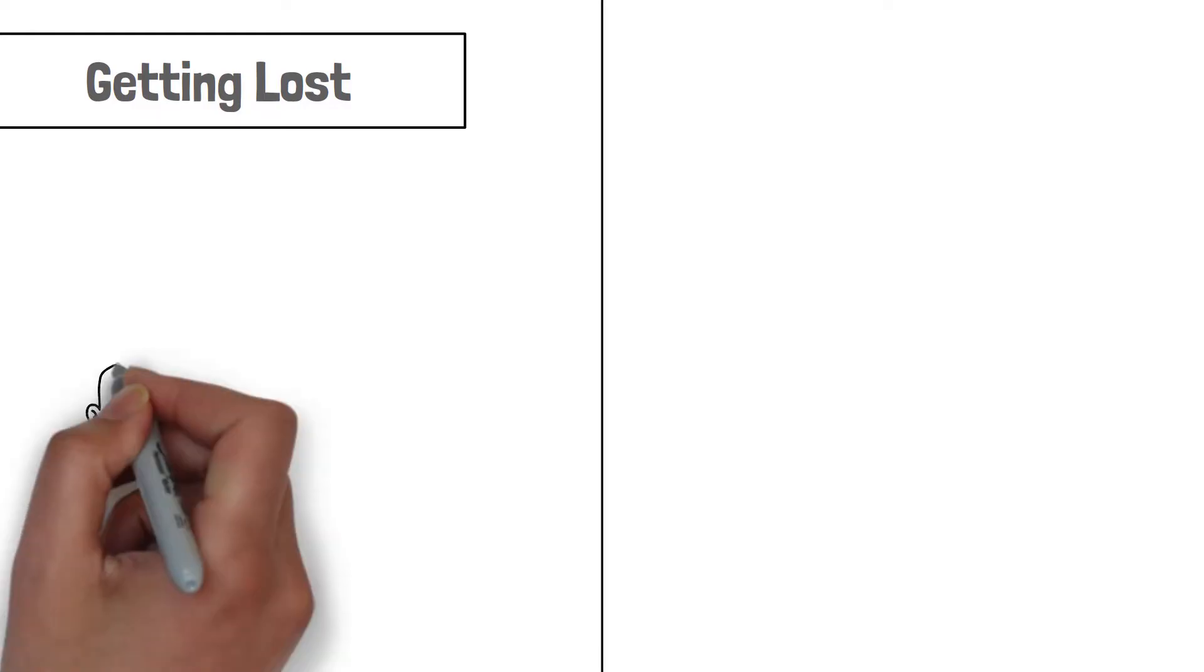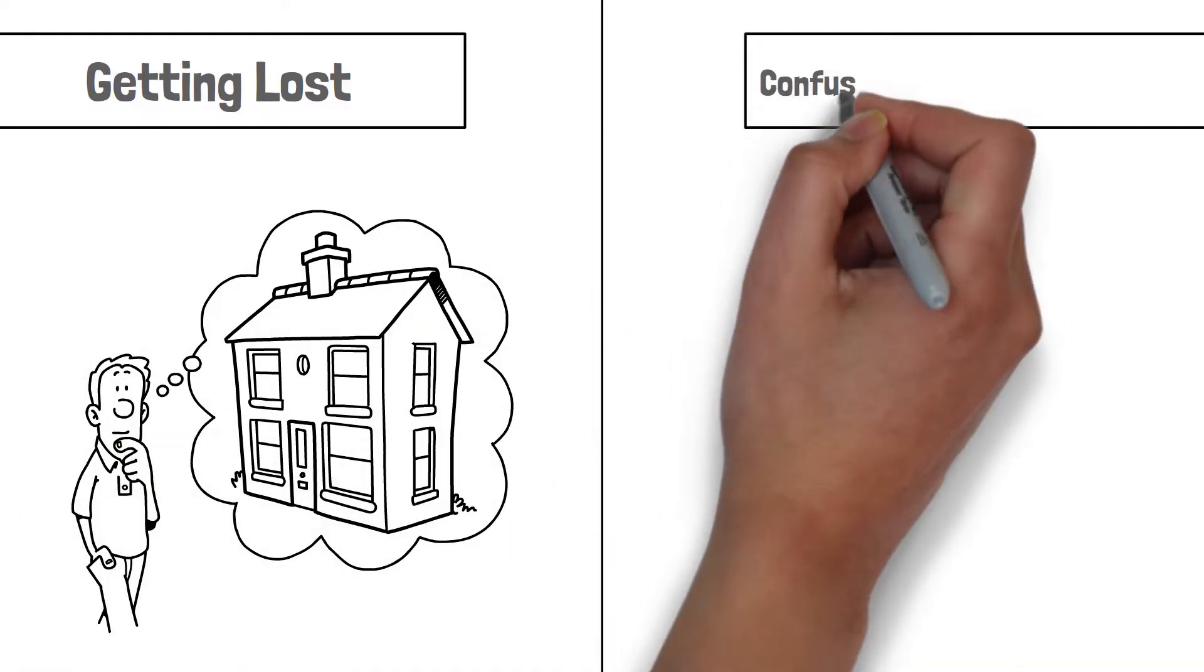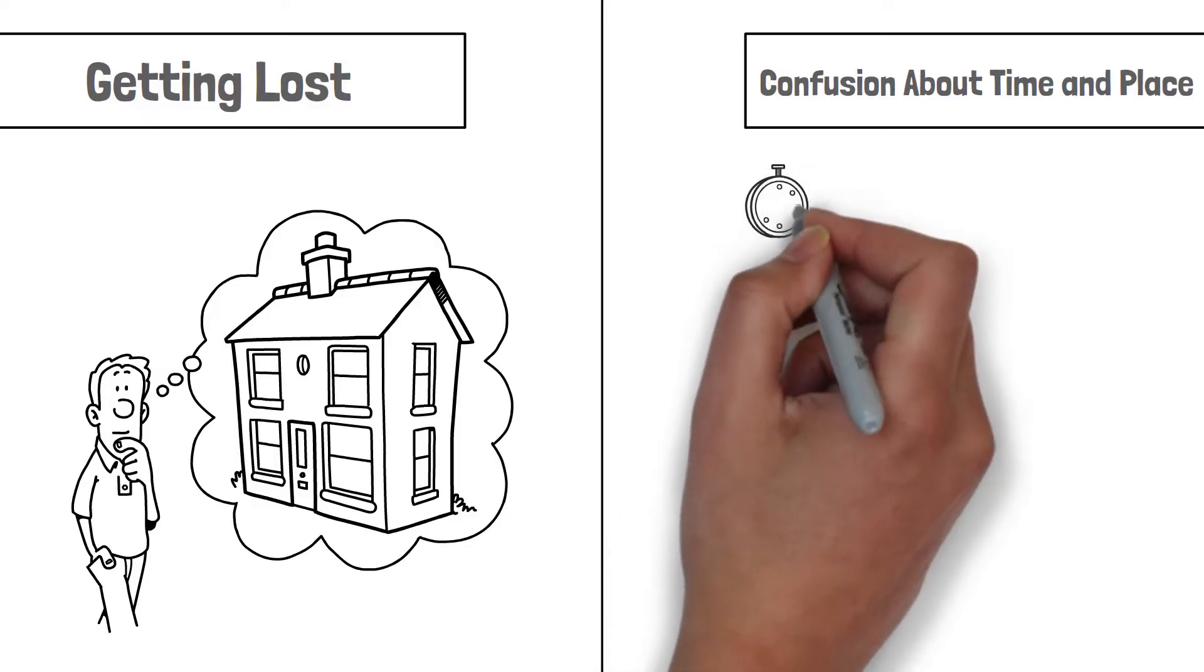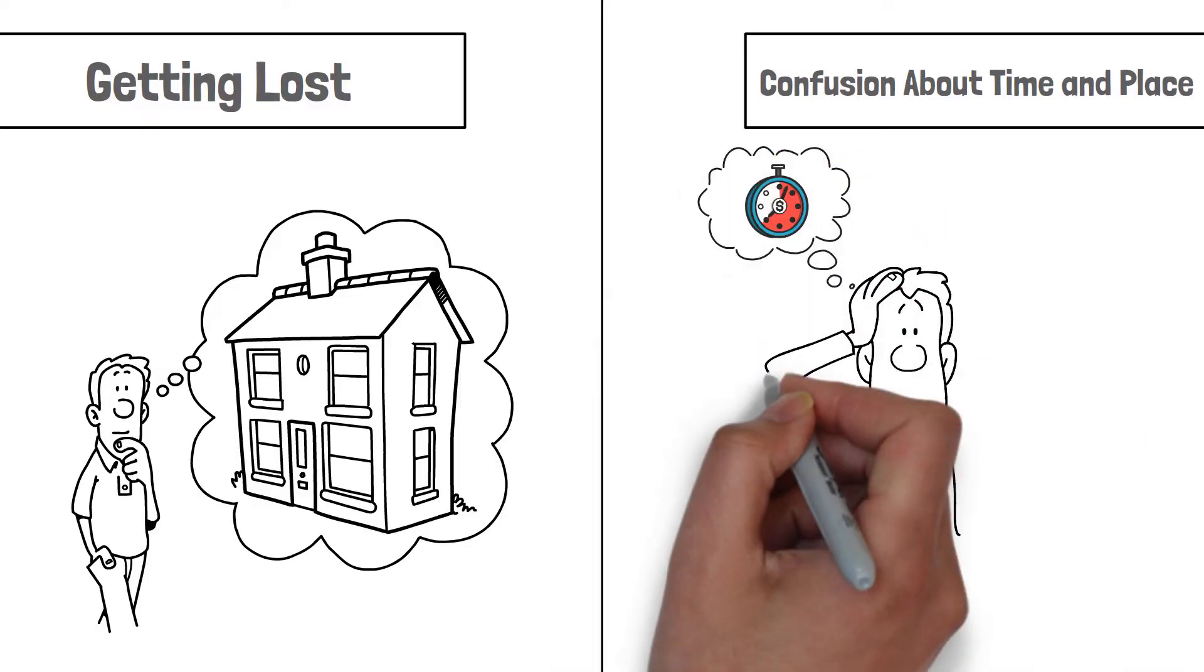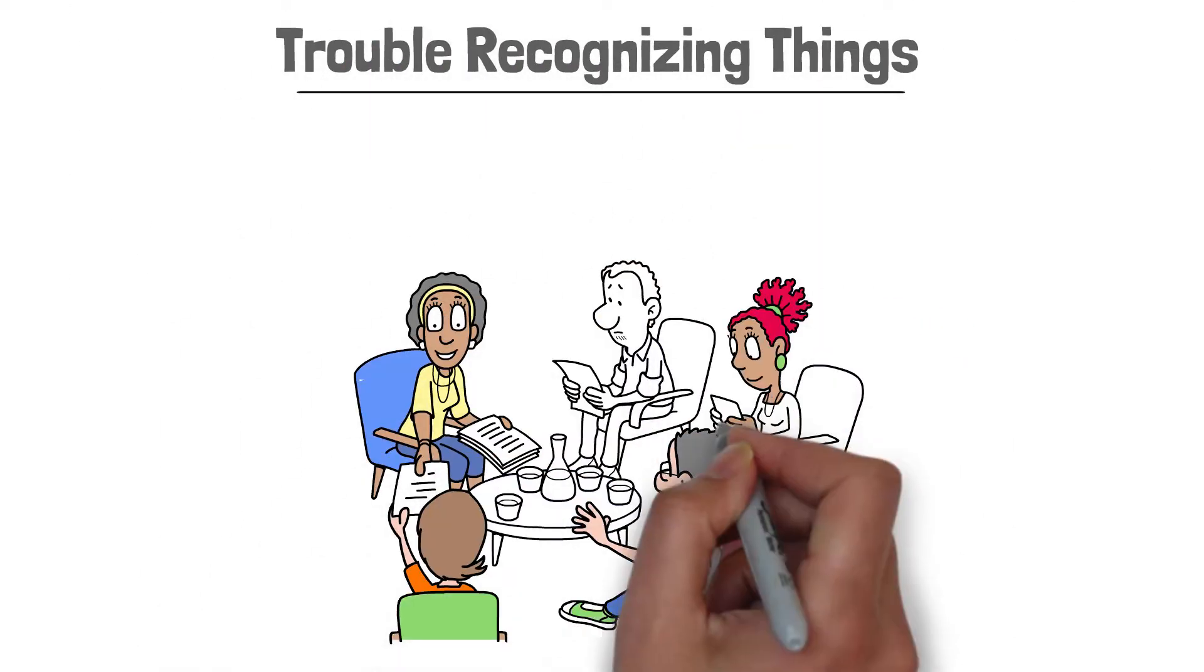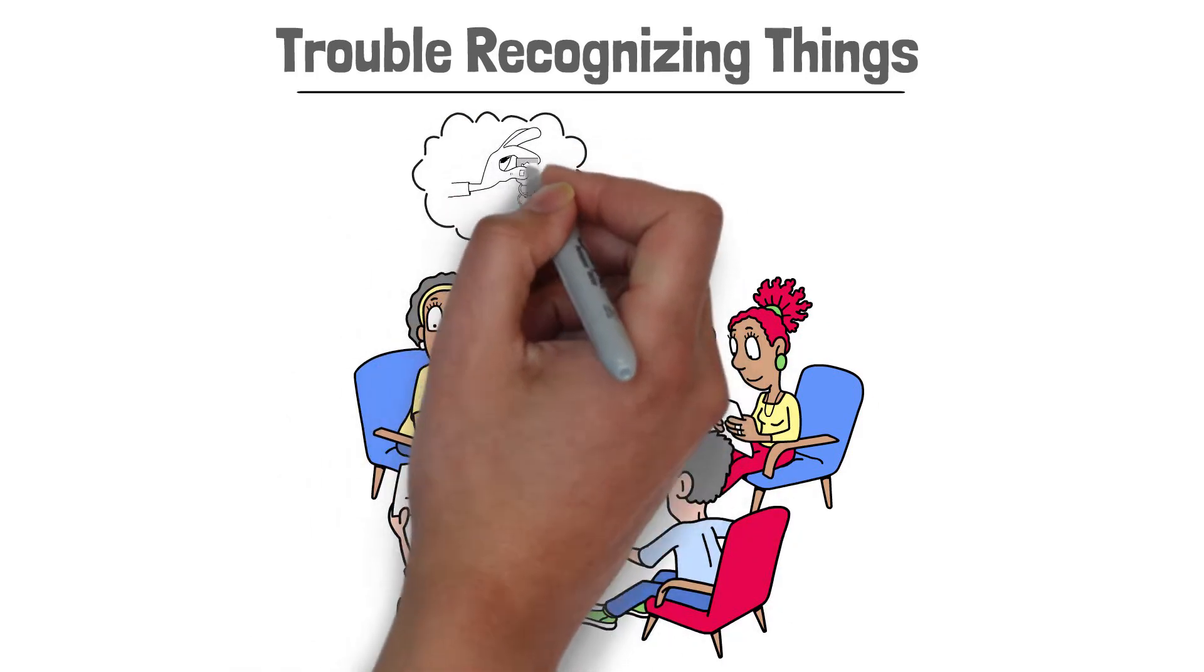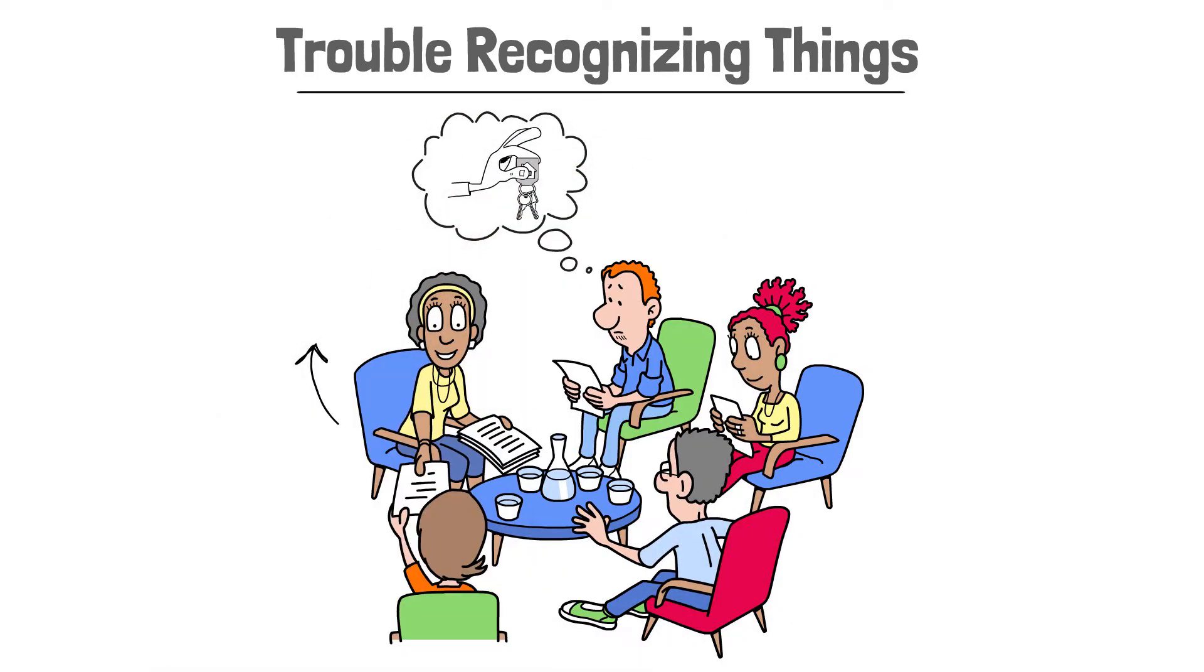Getting lost. Getting lost even in familiar areas, even around your own home. Confusion about time and place. Not knowing the correct time or day or forgetting where you are. Trouble recognizing things. Difficulty in recognizing family members or friends or common objects like a watch or keys. These were some specific symptoms.